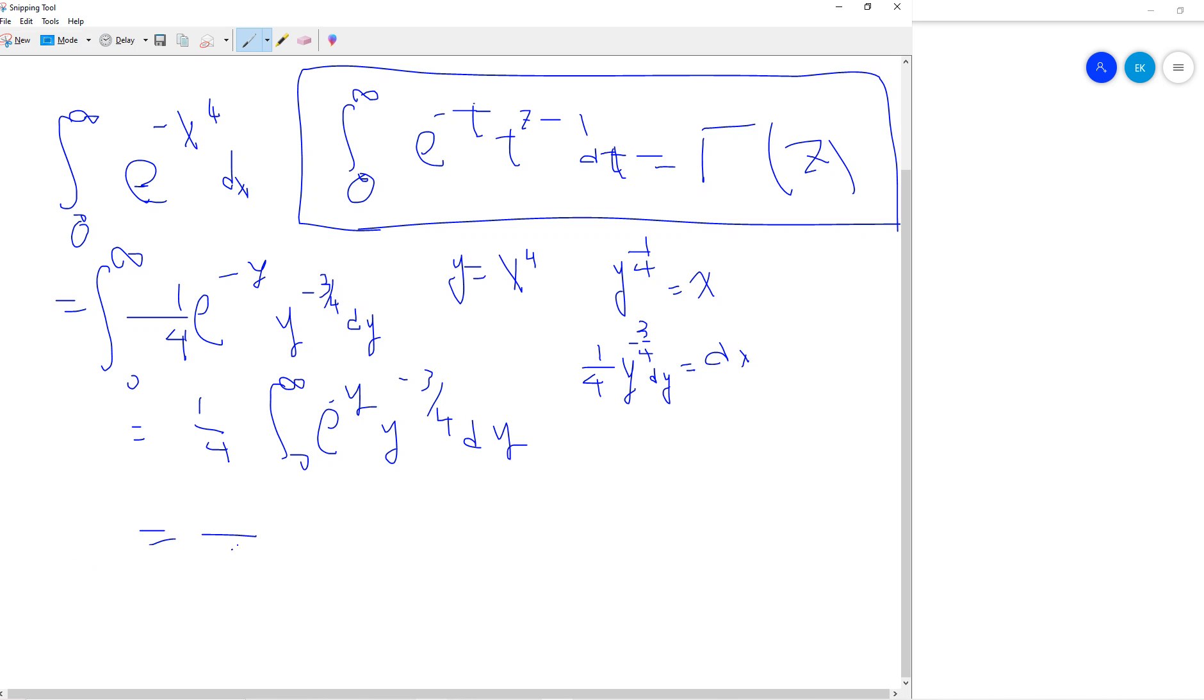So this is just 1 over fourth. And what is this term? This term is just gamma. So this is 1 over fourth.